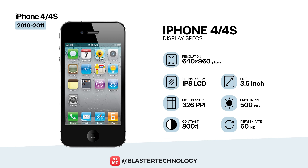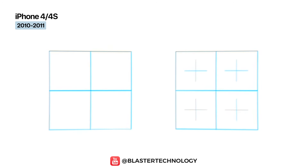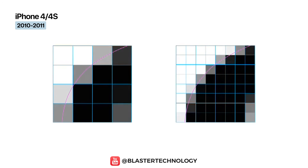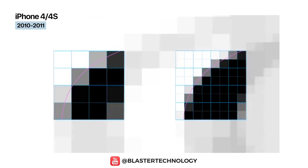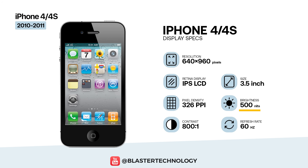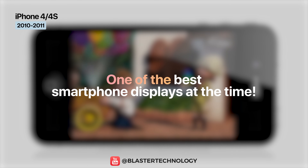The iPhone 4 introduces the iconic Retina display — a 3.5-inch IPS LCD panel with a resolution of 640 x 960 pixels and a density of 326 ppi, double that of previous generations. The term Retina describes a display with a pixel density so high that, at normal viewing distance, the human eye can no longer distinguish individual pixels. The screen reaches roughly 500 nits of brightness and offers a contrast ratio of 800 to 1.